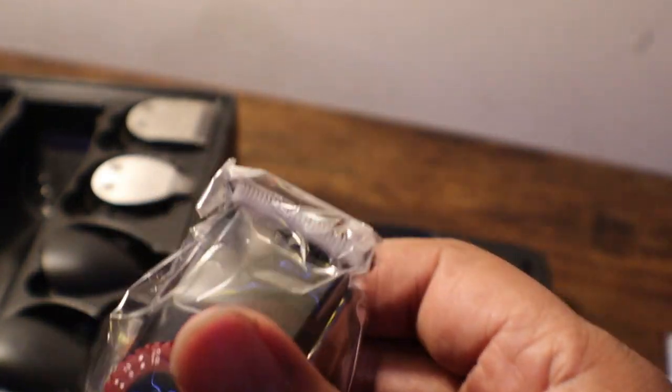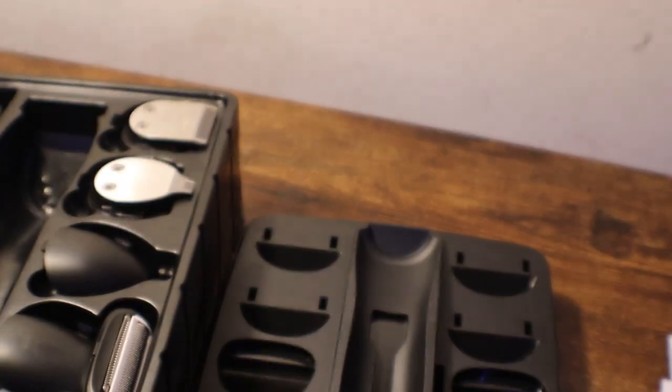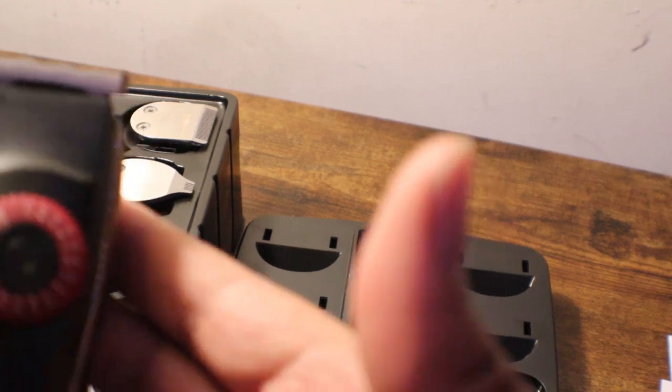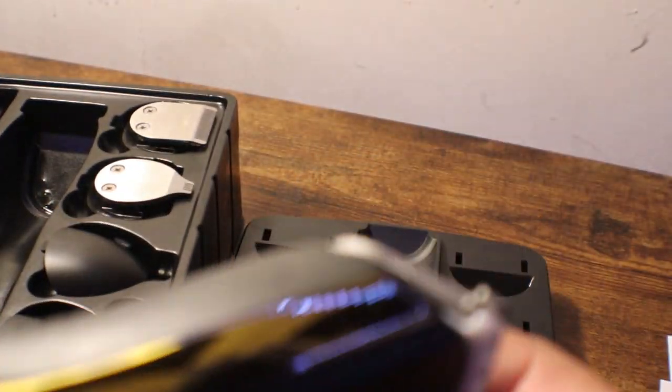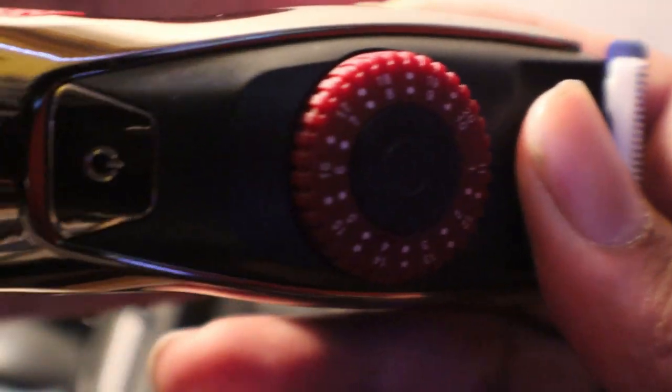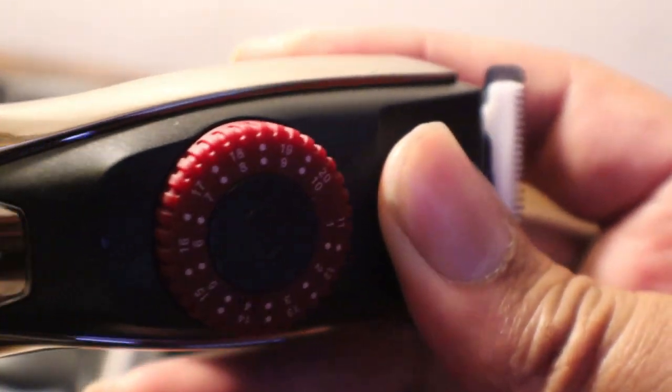So what you would do is you remove that plastic. Now the dial on there, it just depends on how high you like your hair, how you like it to be cut. It goes from 0.5 to all the way to 100, which is 0.5 is the closest. So the higher, the longer your hair. The lower you want it cut towards your skin.